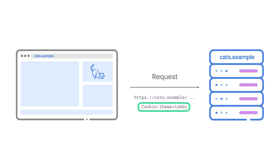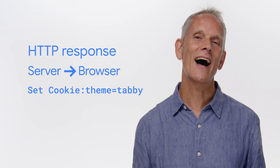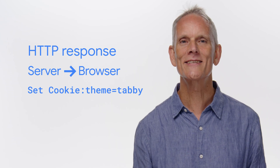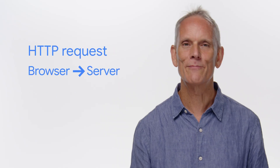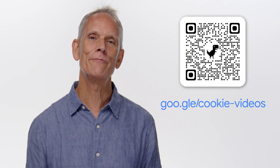That cookie will then be included with subsequent requests to cats.example until the cookie expires or is removed, allowing the server to maintain information about a user across multiple web pages or sessions — for example, that the user currently has the theme tabby set for the website. To sum it all up: your browser makes a request to a web server, the server responds with an HTTP response that might include a set-cookie header. The cookie is stored by your browser and provided in subsequent requests to the server that set it, where your browser will include a cookie header.